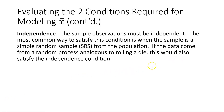The first of the two conditions required for modeling x-bar is exactly the same as when we were modeling sampling distributions of sample proportions, and that is the independence condition. The sample observations must be independent. The most common way to satisfy that condition is when the sample is a simple random sample from the population, or if we're doing an experiment, if the data come from a random process analogous to rolling a die.